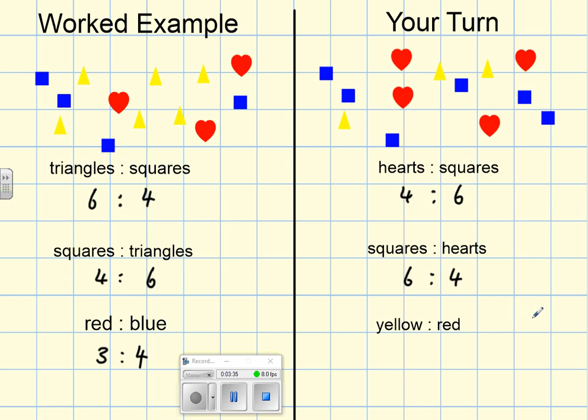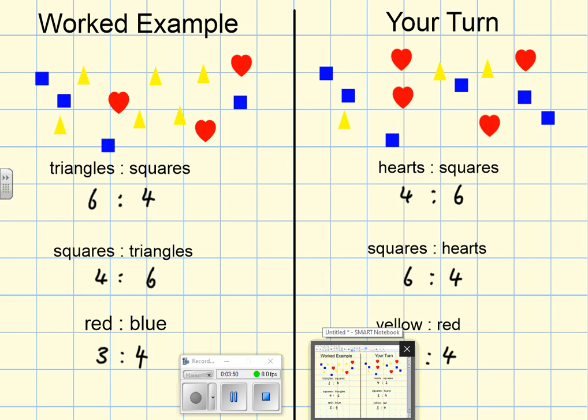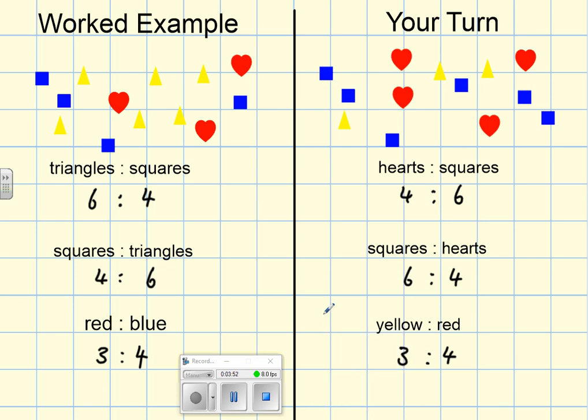And the final one is the ratio of the yellow shapes to the red shapes, and I can see I've got 1, 2, 3 yellow shapes to 1, 2, 3, 4 red shapes. The ratio of yellow to red is 3 to 4. You can now go back to the practice exercise and carry out those questions.